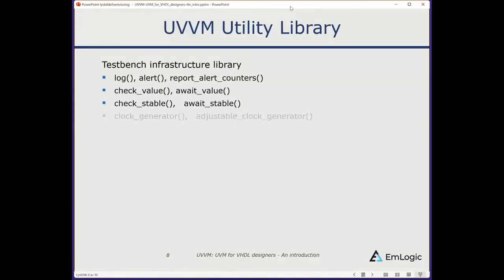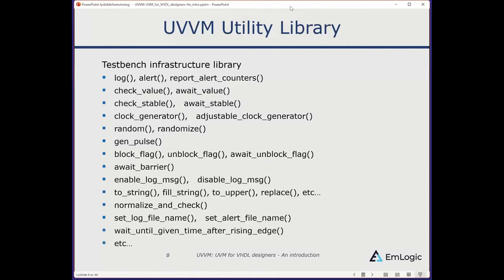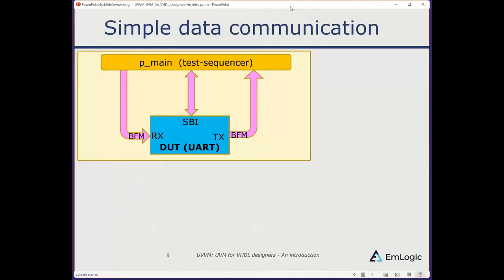The UVVM Utility Library, which is the entry level platform for everything else, includes lots of different functionality: clock generators, random flags, semaphores, verbose control, string handling, and much more.